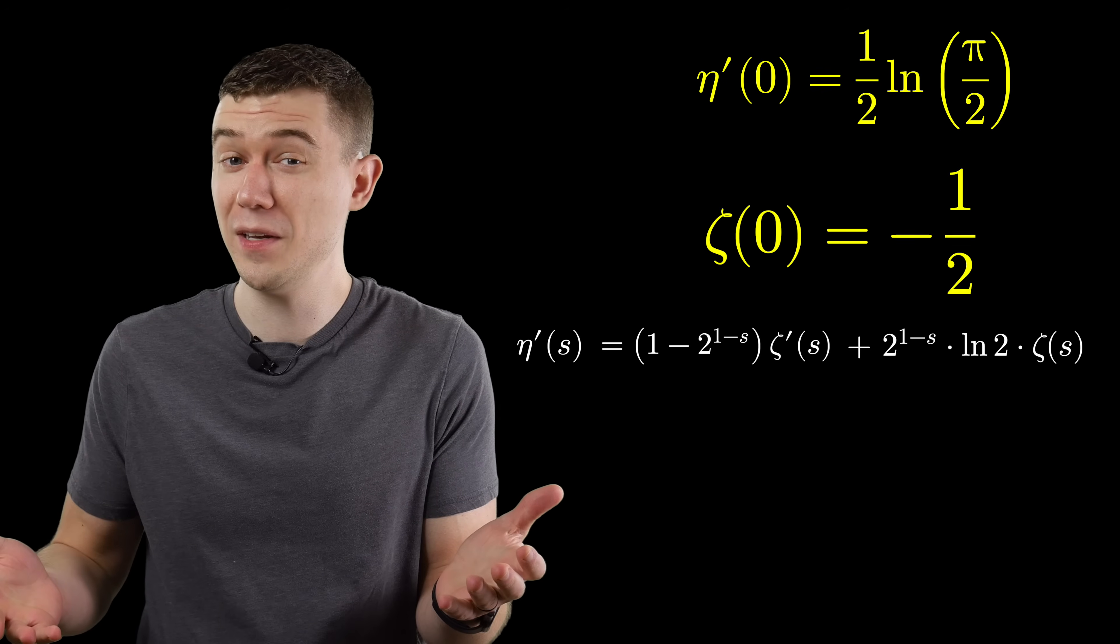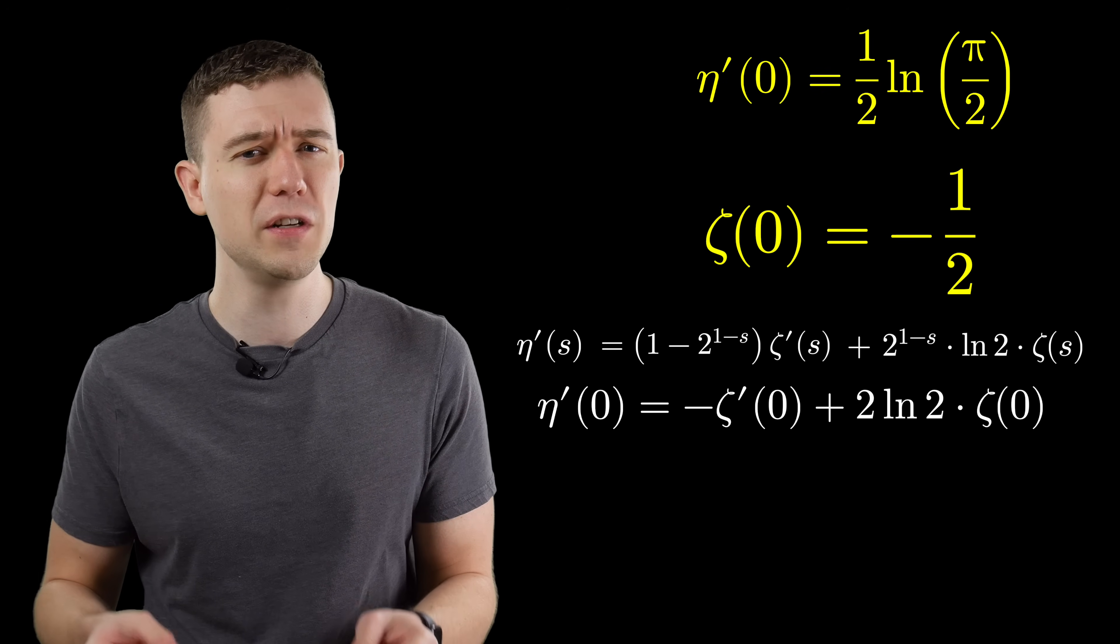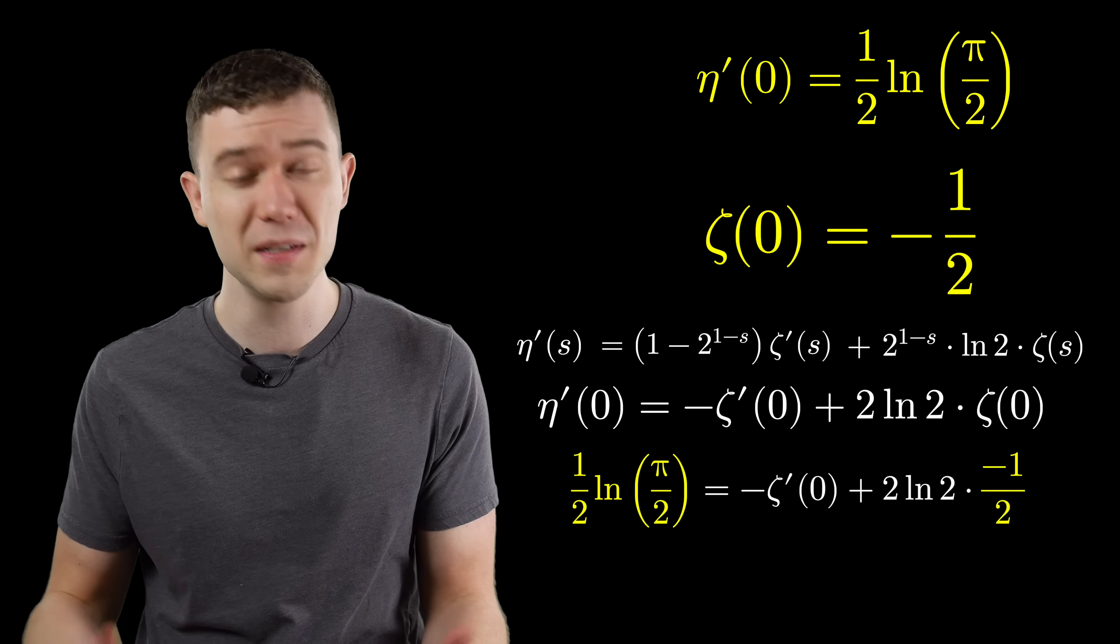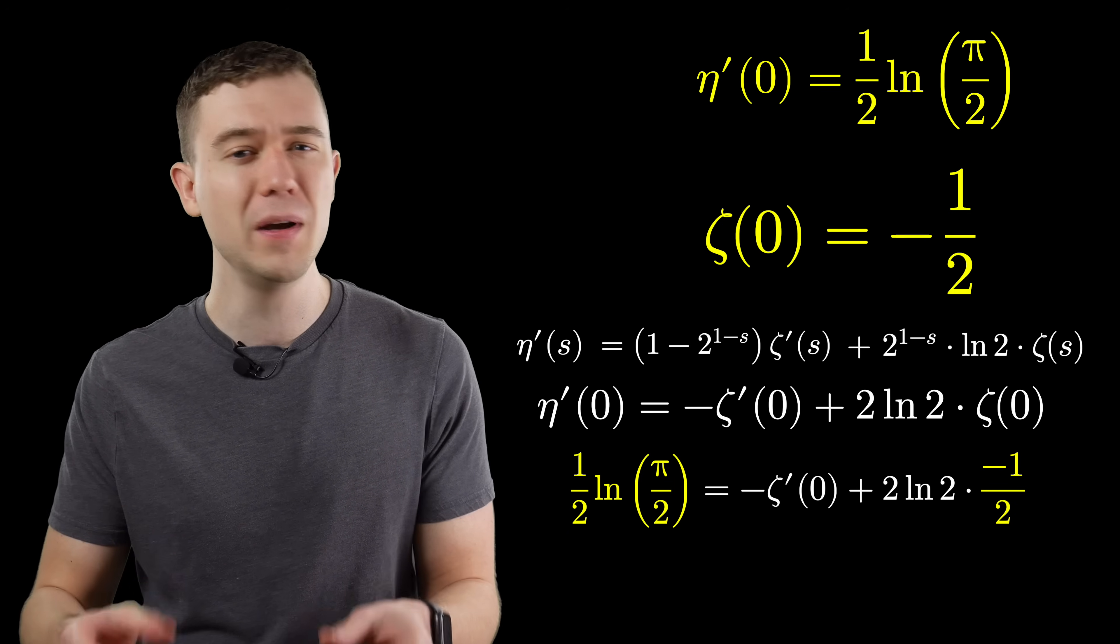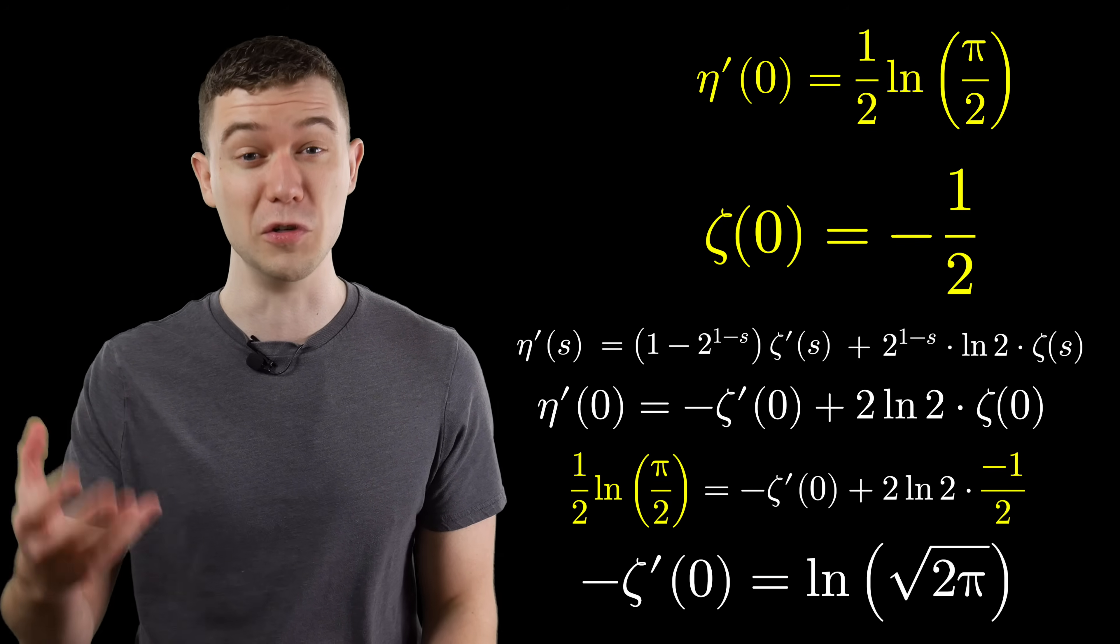Now we have everything we need, just do a little bit of algebraic manipulation, some properties of logarithms, and we'll see that the derivative of the Riemann zeta function at zero is equal to natural log the square root of 2 pi.